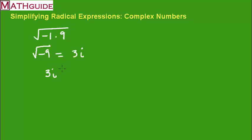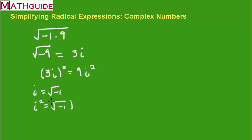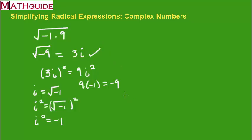How do I know that works? I would have to take 3i and square it. So 3i times 3i gives 9i². Now, if i is the square root of negative 1, squaring both sides shows that i² equals negative 1. So 9 times negative 1 is negative 9, which is what we had underneath the radical to begin with. Therefore that answer has to be correct.